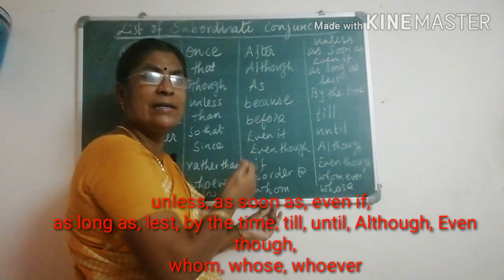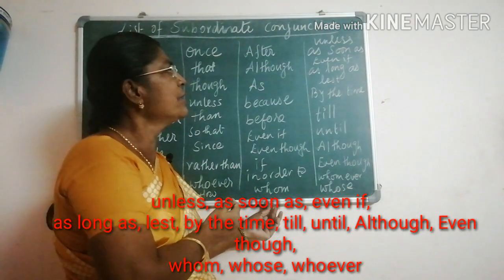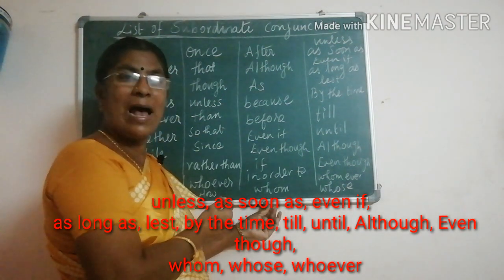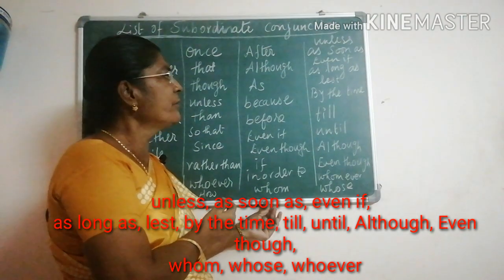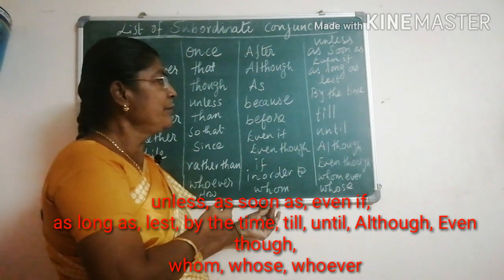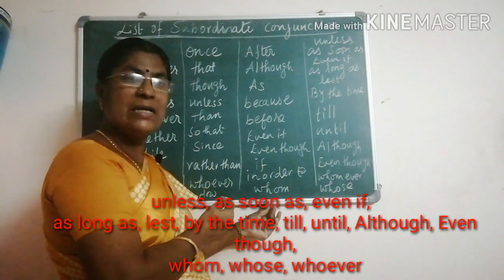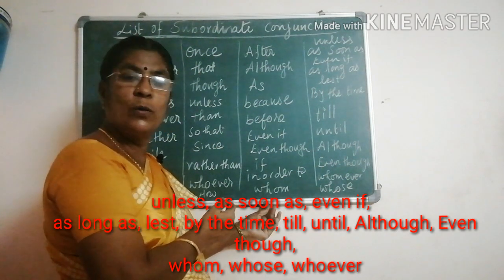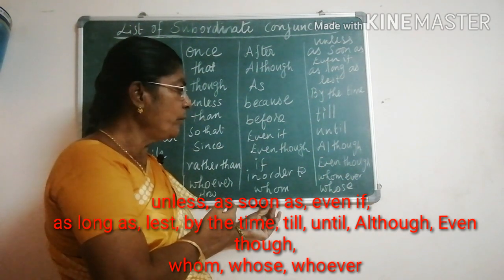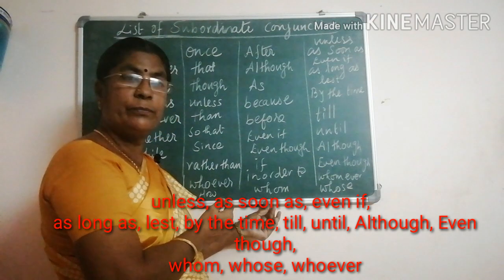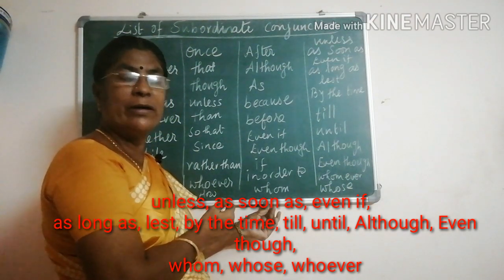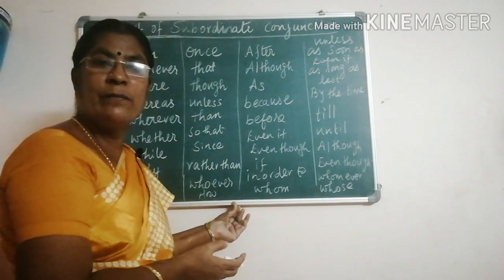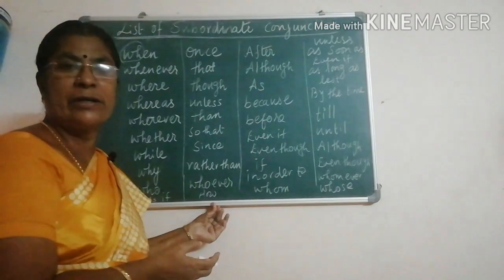Unless, as soon as, even if, as long as, least, by the time, till, until, although, even though, who, whomever, whose. These are all subordinate conjunctions.